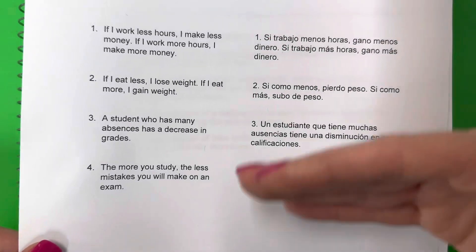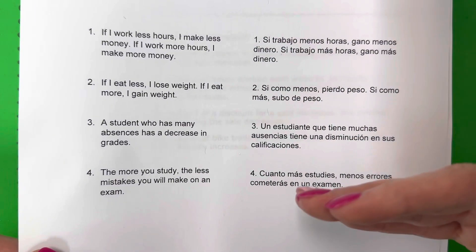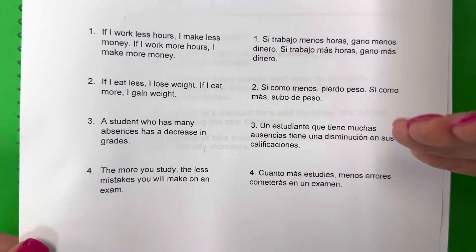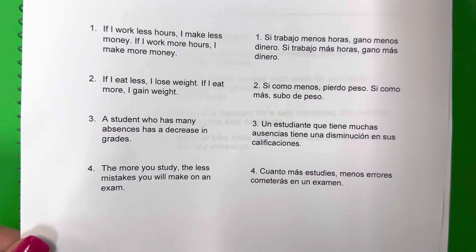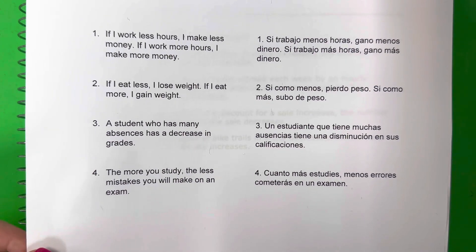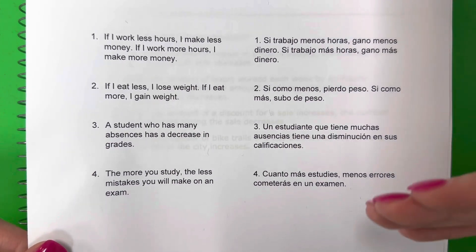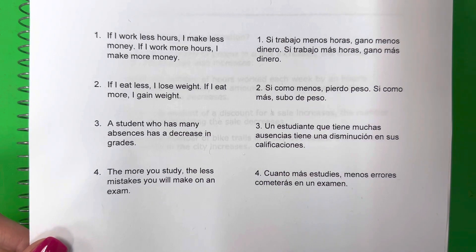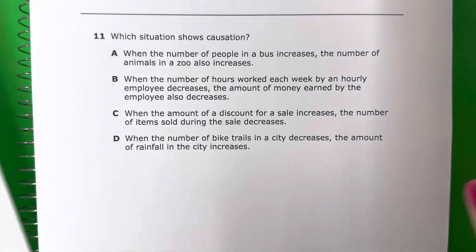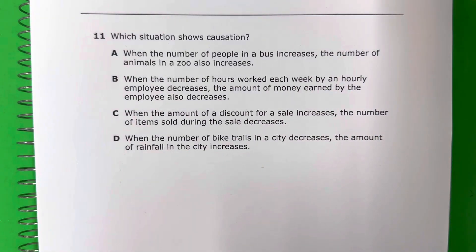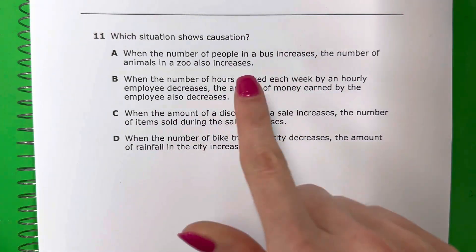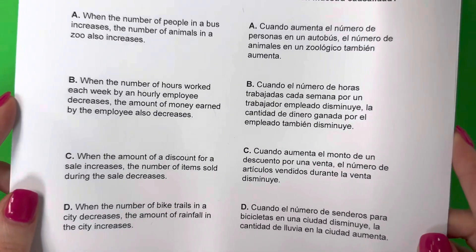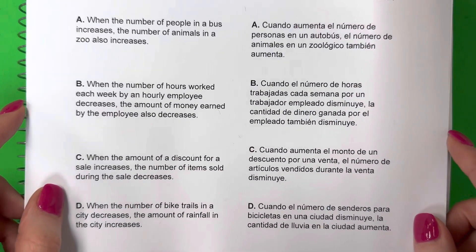So remember, these are cause and effect — what I do or what happens has a consequence. Estos son causa y efecto. ¿Qué hago o qué pasa tiene una consecuencia? Now let's go ahead and look at the examples given. Ahora vamos a mirar a los ejemplos que están en la pregunta.